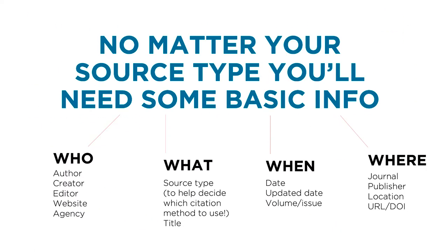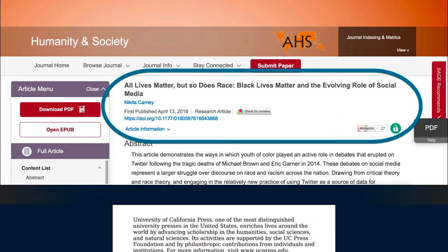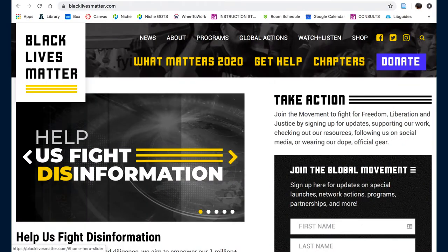Regardless of your source type, you'll need to find and include basic information about the source — the who, what, when, and where — in your complete citation. You can often find this information on an article's record page, a book's copyright page, or by investigating the website.